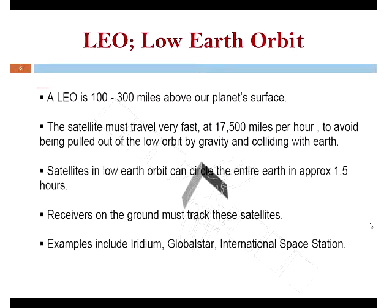Low Earth Orbit is between 100 to 300 miles above our planet. Satellites must travel at 17,500 miles per hour and orbit the Earth in about 1.5 hours. Ground stations must track these satellites as they move across the sky. Examples of LEO systems include Iridium, Globalstar, and the International Space Station.